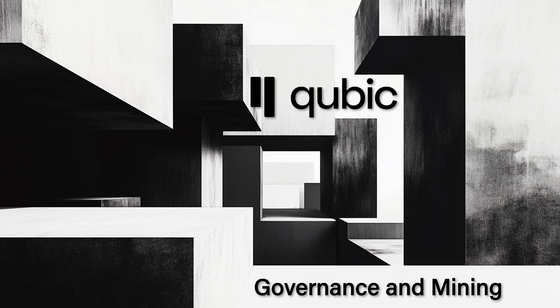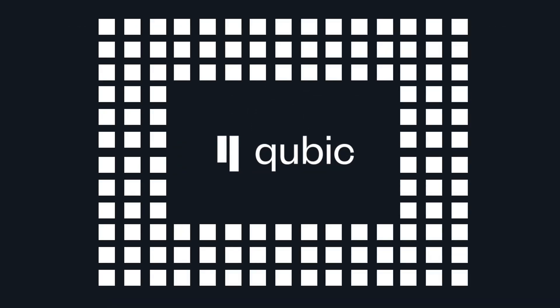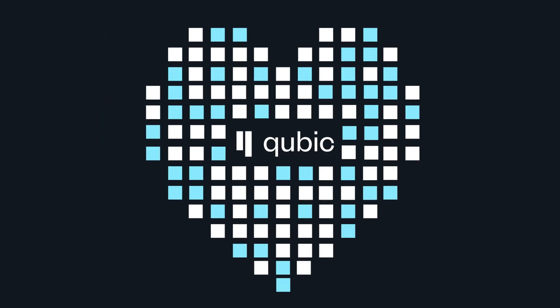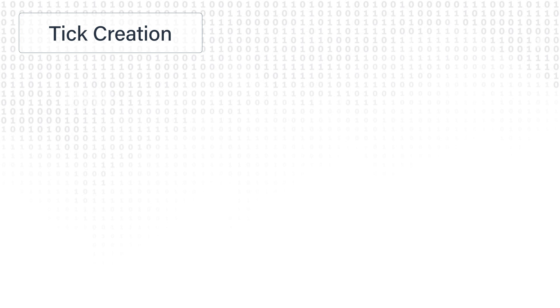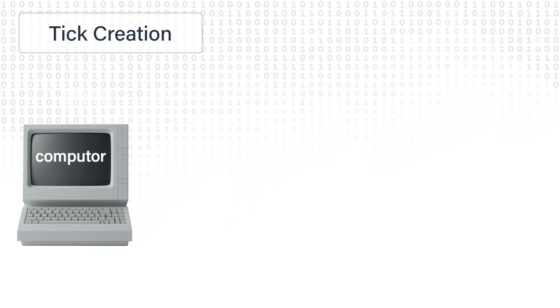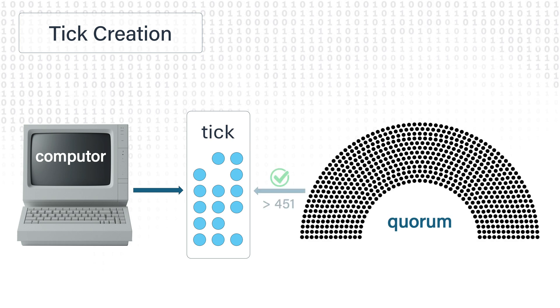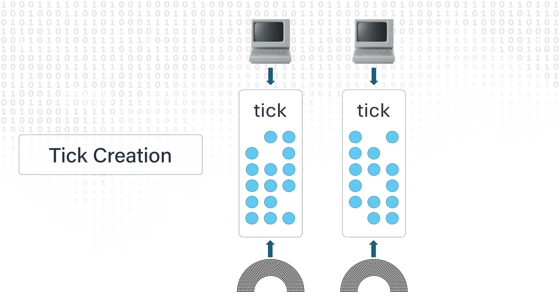Now let's talk about governance and mining. In a system this fast, consensus must have a unique design — it's called the Quorum consensus. The Quorum consists of 676 validators called computers, running powerful spec servers typically hosted at data centers. Each of them hosts Cubic software and runs all tick chain operations from their RAM. Every tick has its own computer leader — a validator who proposes the new tick. Each tick in the chain is a round of consensus where a minimum of 451 computers must sync up and agree on a tick for it to be valid.